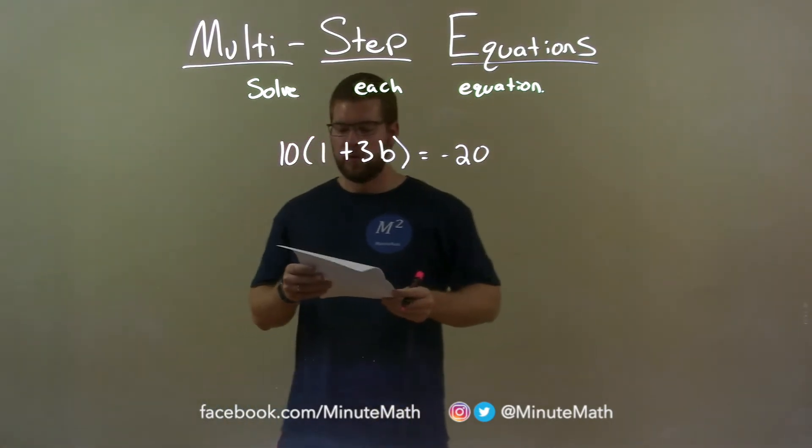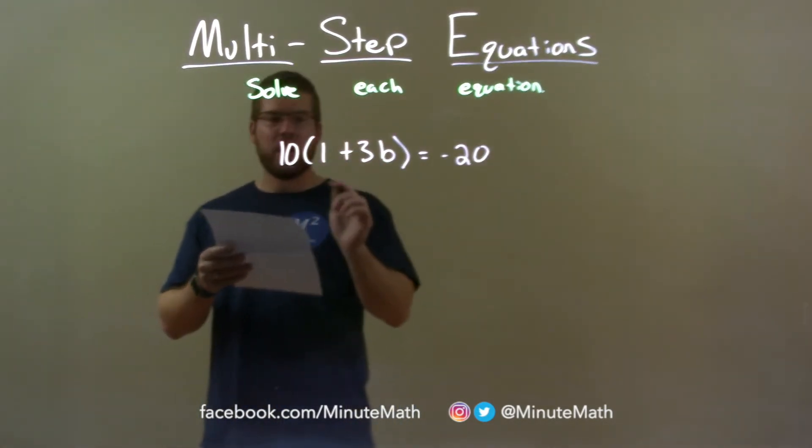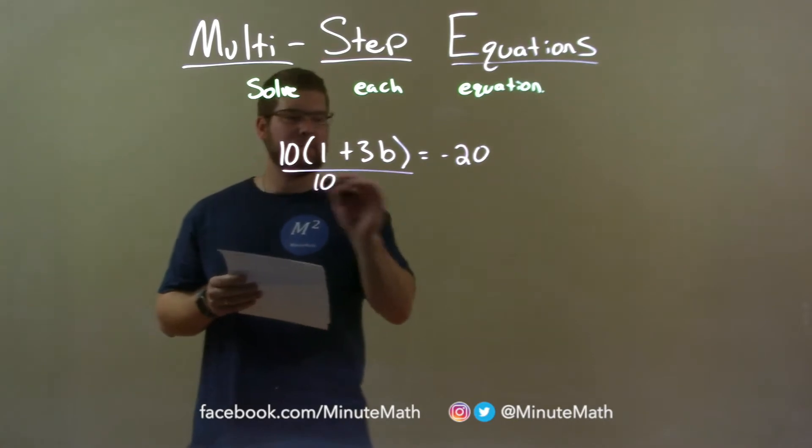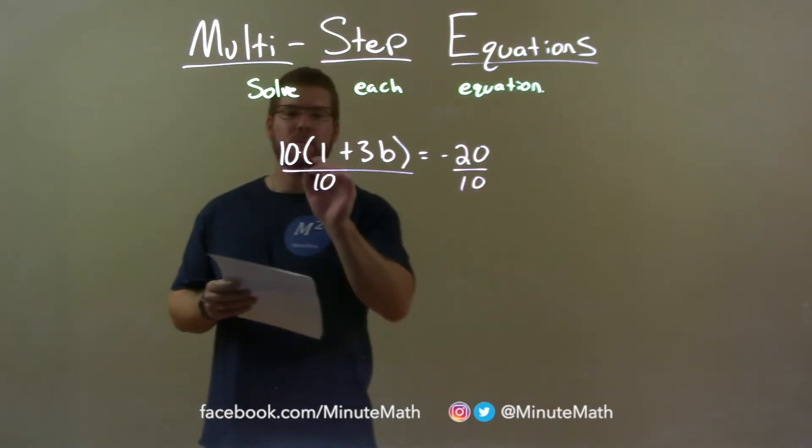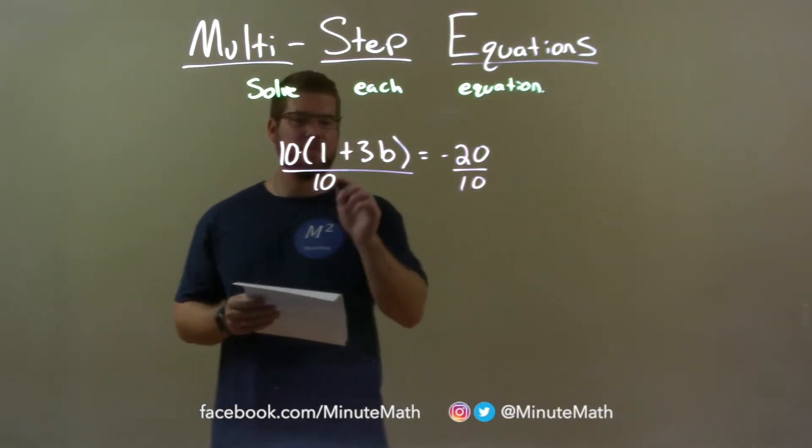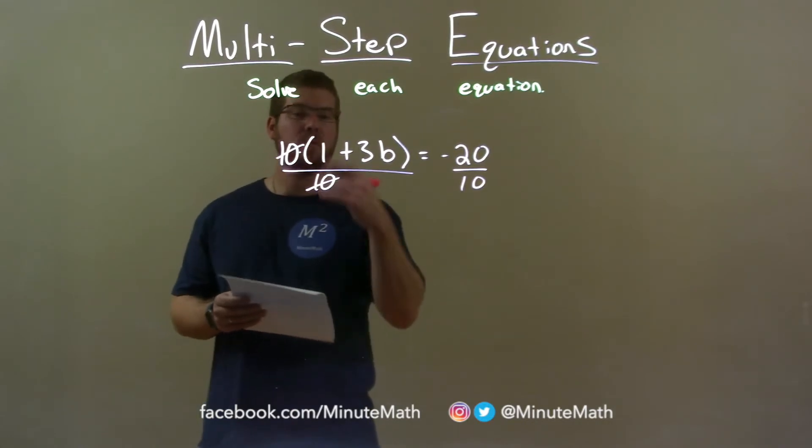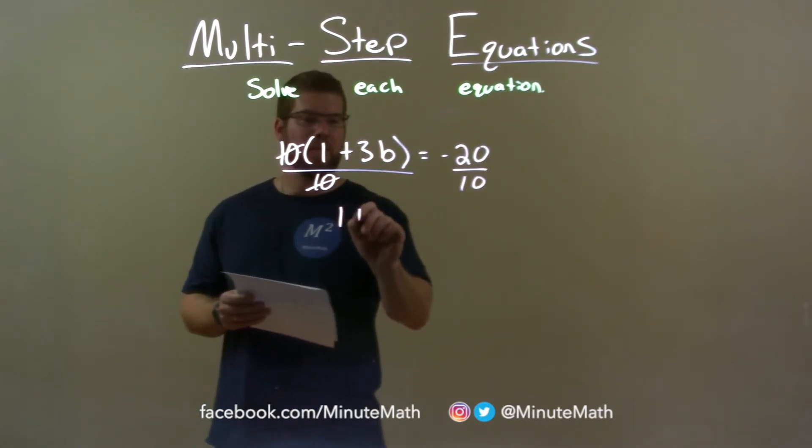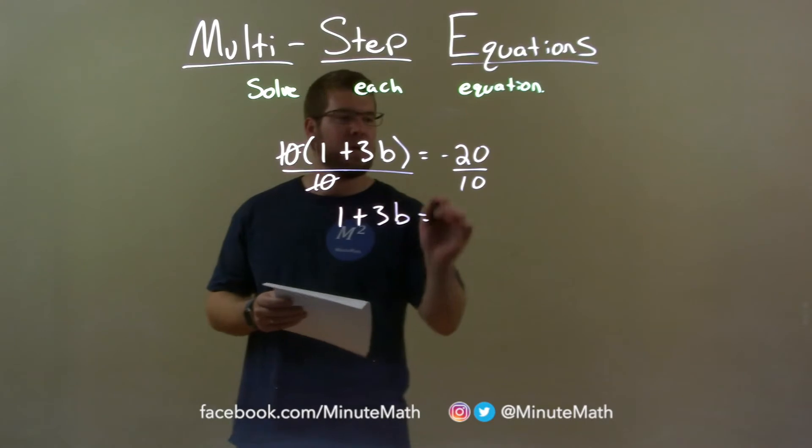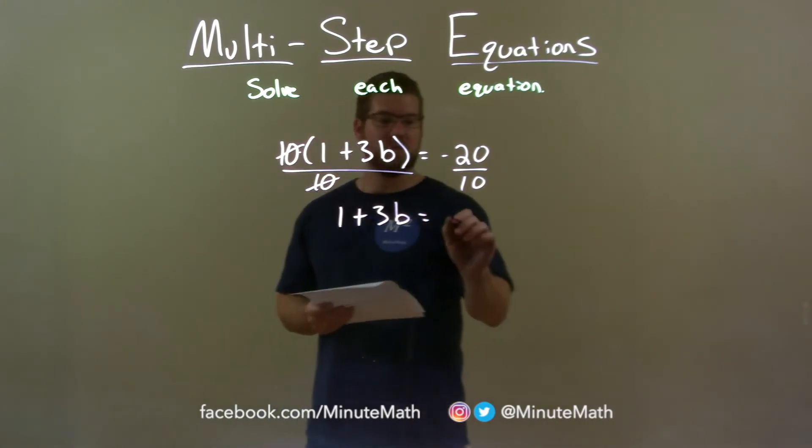First thing I want to do here is I'm going to divide both sides by 10. Since we're being multiplied here by the parentheses, if I divide both sides by 10, 10 is cancelled and I'm left with what's inside the parentheses: 1 plus 3b. Negative 20 divided by 10 is negative 2.